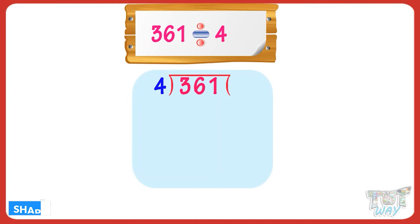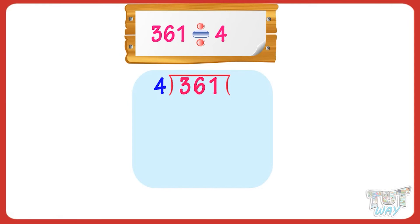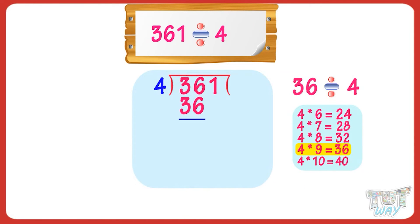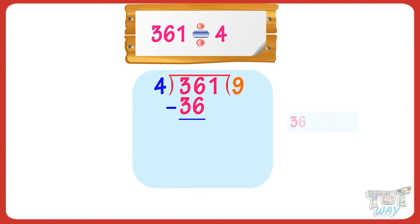Now, we cannot divide the first digit of the dividend. So, we take the first two digits, which is 36. 4 multiplied by 9 equals 36. So, write 36 below 36 and 9 in the quotient. We got 0 on subtracting. Now, bring down the last digit, that is 1.